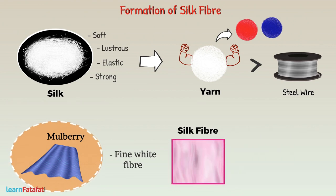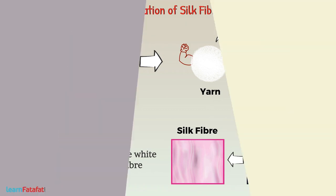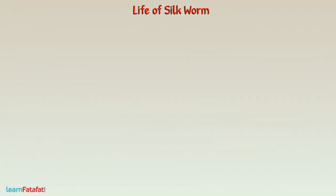Silk fibers are obtained from the cocoon of the silkworm. Let's understand the life of the silkworm and how the cocoon is formed by them.